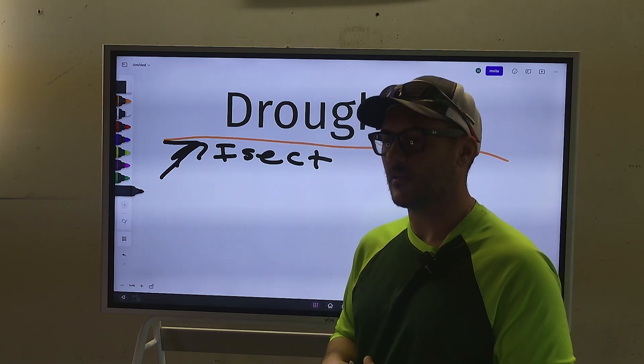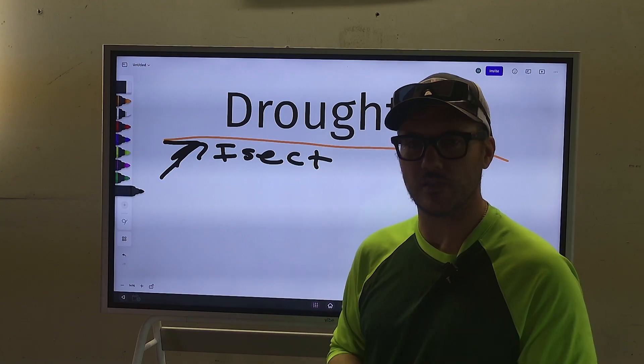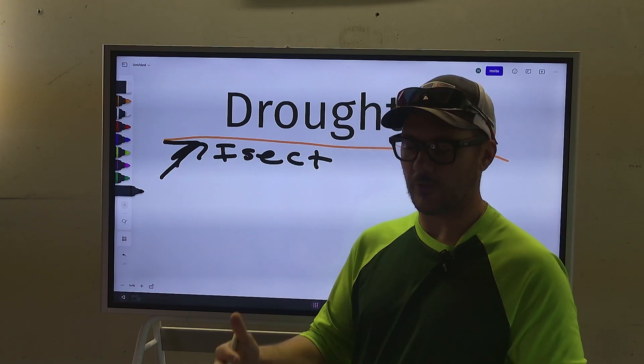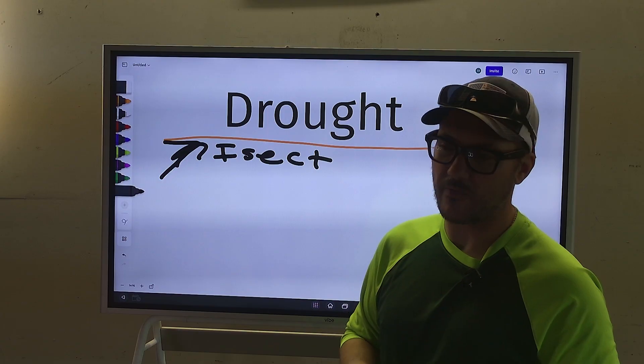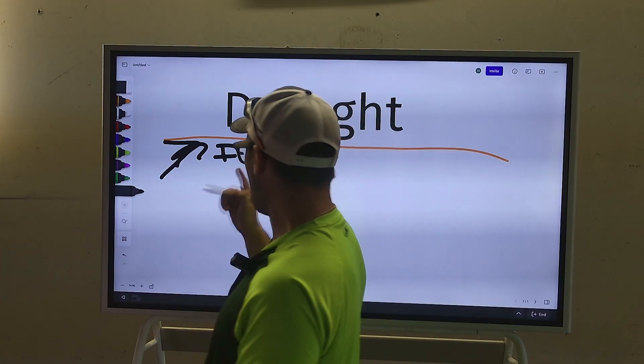On top of that, what it's going to cause is basically stress on the trees and the shrubs, the grass. And when that has stress, insects move in. They're opportunistic. If we have a healthy tree, a healthy shrub, we're not going to have the same issues with insects because they're healthy.